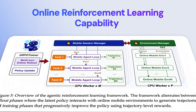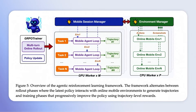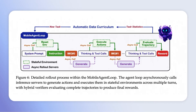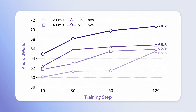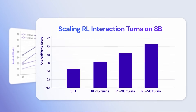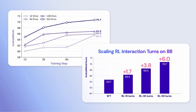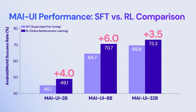Furthermore, they build massive parallel environments and scale the environment interaction steps for online reinforcement learning. Through iterative rollout and RL training in dynamic environments, MyUI continuously evolves like a human in real-world scenarios. The framework supports online RL training across 512 parallel environments and extends the maximum trajectory horizon to 50 steps, enabling consistent improvement on long-horizon tasks under the Android World Benchmark.